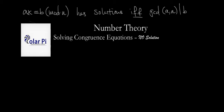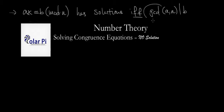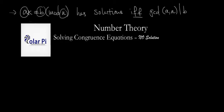One of the things we said in that general discussion in the one-solution video is what's written up here: this equation has solutions if and only if the greatest common divisor of A and N divides B. This vertical bar means 'divides.' So we need the greatest common divisor of A and N to divide B in order for us to say that this has a solution.